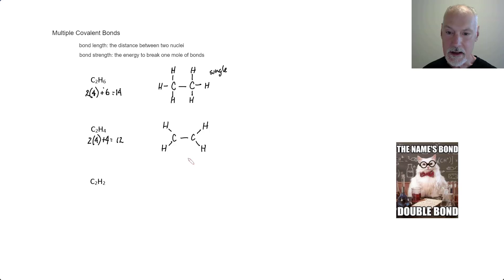Now at this point, I've used up 10 electrons and I can see that the carbons in the center aren't satisfied yet, don't have octets. So I'm going to put a double bond in there. So that's an example of a double covalent bond.